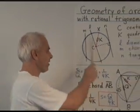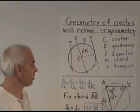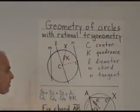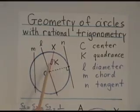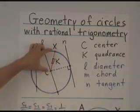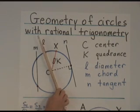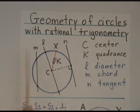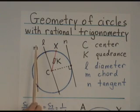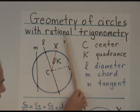Circles, there's one right there. Here's some basic terminology. The center of a circle, the quadrance of the circle, that's not the radius, it's the square of the radius. A line through the center is a diameter. Another arbitrary line that meets the circle at two points is a chord. And this kind of line that just touches the circle in one point is a tangent.